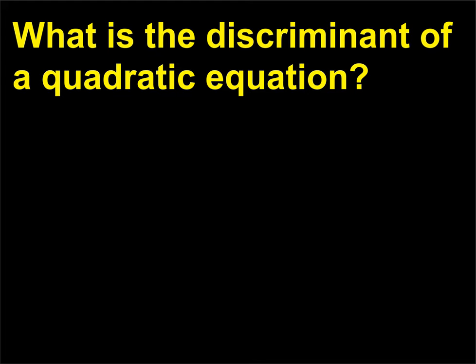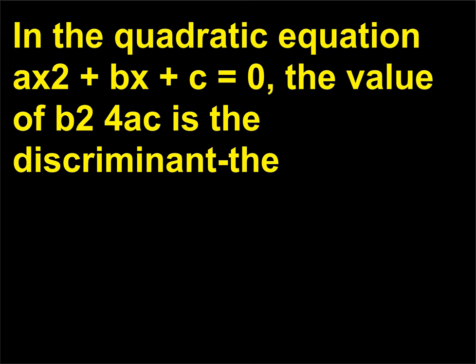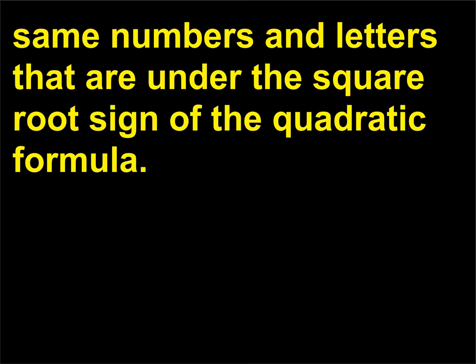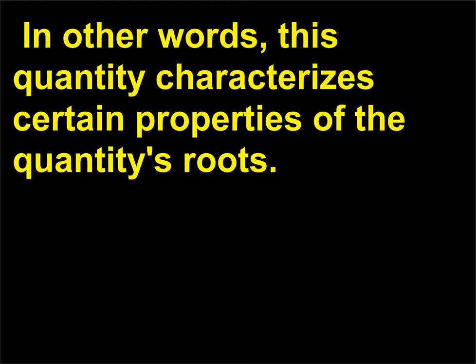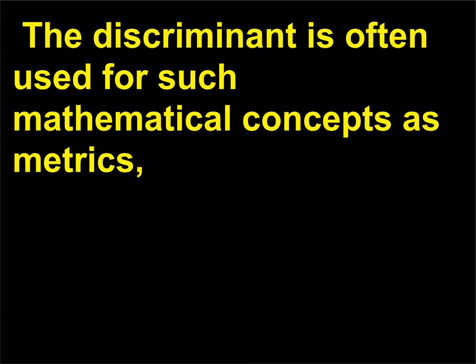What is the discriminant of a quadratic equation? In the quadratic equation AX² + BX + C = 0, the value of B² − 4AC is the discriminant — the same numbers and letters under the square root sign of the quadratic formula. This is actually the product of the squares of the polynomial root differences. In other words, this quantity characterizes certain properties of the equation's roots. The discriminant is often used for such mathematical concepts as metrics, modules, quadratic fields, and polynomials.